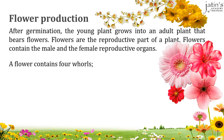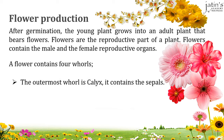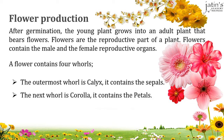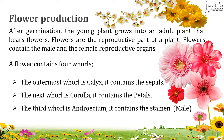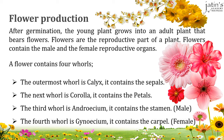A typical flower contains four whorls. The outermost whorl is the calyx, which contains the sepals. The next whorl is the corolla, which contains the petals. The third whorl is the androecium, which contains the stamen — also called the male reproductive part of a flower. And the innermost whorl is the gynoecium, which contains the carpel, also known as the pistil, which is the female reproductive part of a flower.